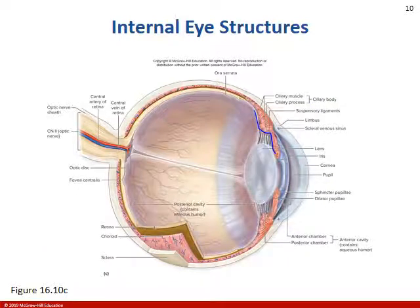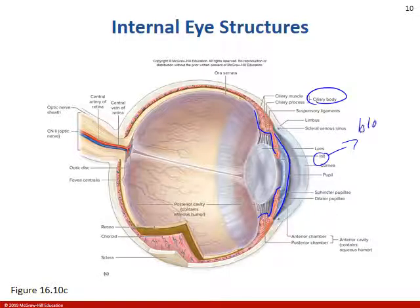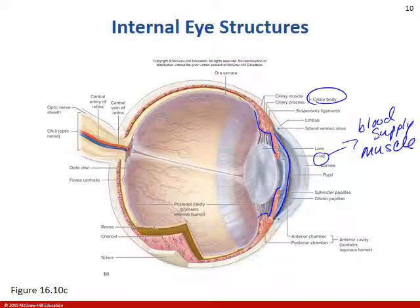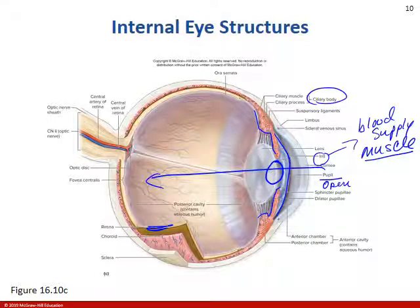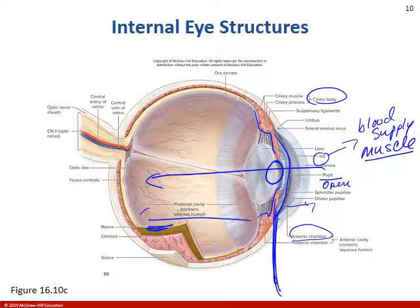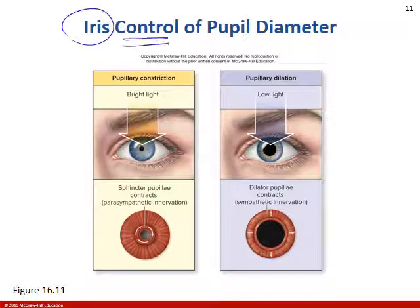The iris is an extension of the ciliary body and part of the vascular tunica, so it's going to have blood supply. We're also going to see muscles here. The iris is kind of the division point between the anterior cavity and the posterior cavity. The iris controls the pupil diameter.